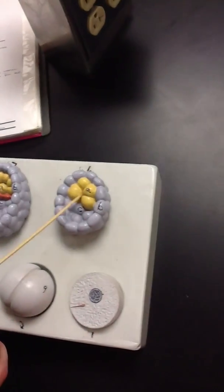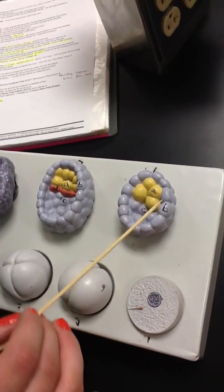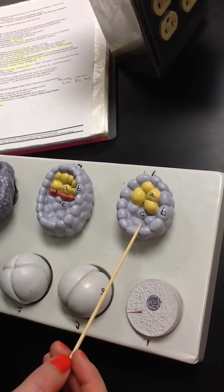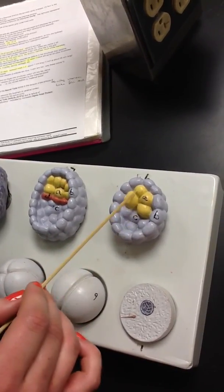Then up here we have a blastula. This is a hollow ball of cells. It begins around day 4. And by this time, the embryo has reached the uterus. We have the inner cell mass, which will become the embryo proper.